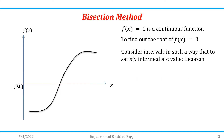Consider the intervals in such a way that they satisfy the Intermediate Value Theorem. The Intermediate Value Theorem states that if f(x) is a continuous function in the interval [x0, x1], and if f(x0) and f(x1) produce opposite signs, then there has to be at least one real root in the interval [x0, x1].